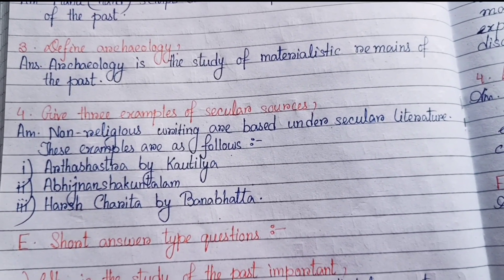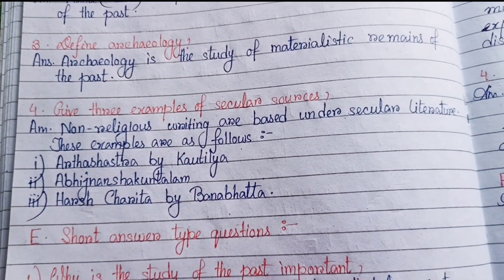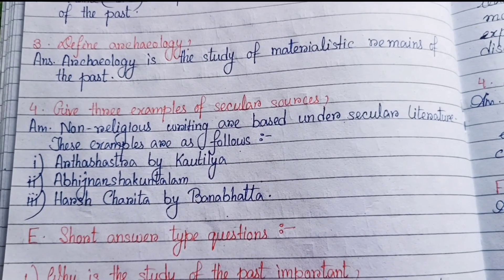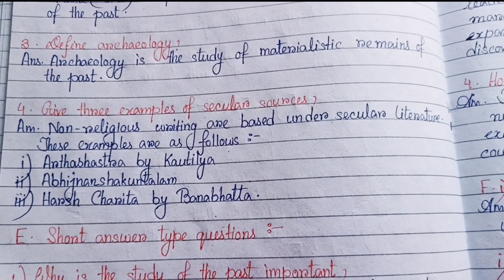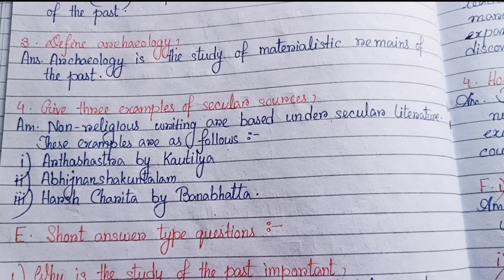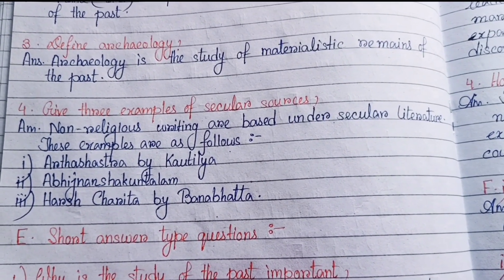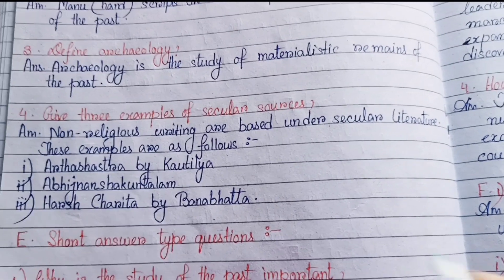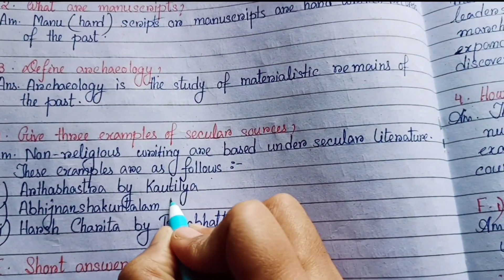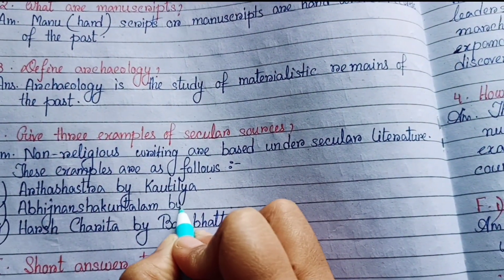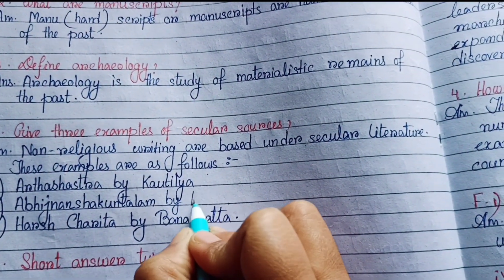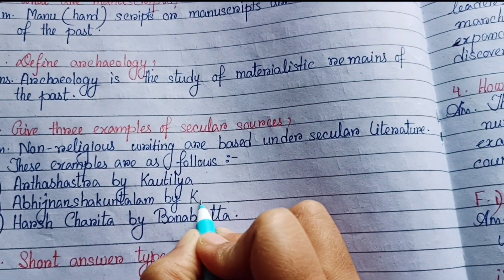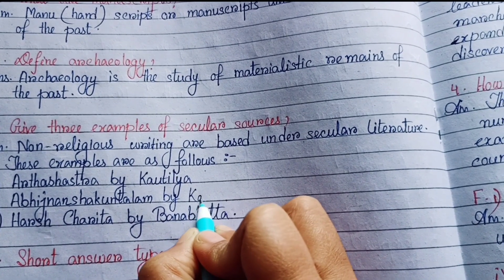Number four: give three examples of secular sources. Non-religious writings are based under secular literature. Examples are: number one, Arthashastra by Kautilya; number two, Abhijnana Shakuntalam by Kalidasa; number three, Harshacharita by Banabhatta.